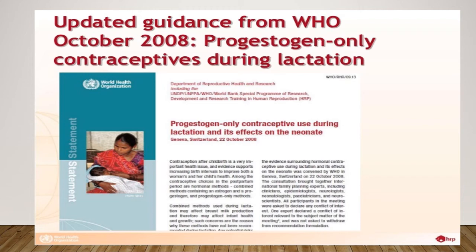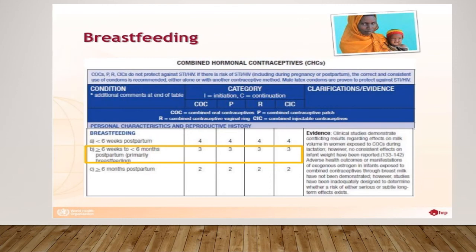Beyond 6 weeks postpartum, there is no restriction for the use of progestogen-only contraceptive methods among breastfeeding women; beyond 4 weeks postpartum there is no restriction for IUD use. Clinical studies have demonstrated conflicting results regarding the effects on milk volume in women exposed to combined oral contraceptive pills during lactation. No consistent effects on infant weight have been reported, and adverse health outcomes from exogenous estrogen in infants exposed through breast milk have not been demonstrated, though studies have been inadequately designed to determine long-term risks. Therefore the combined oral contraceptive pill has been categorised as MEC 3 for postpartum breastfeeding women.